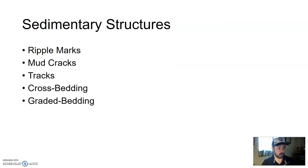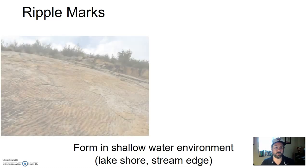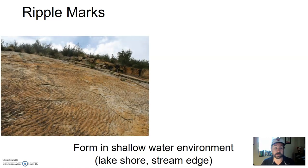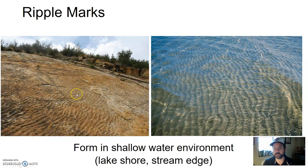Some of those structures include ripple marks, mud cracks, tracks, cross bedding, and graded bedding. Ripple marks form in shallow water environments — typically near a lakeshore or stream edge. The present is the key to the past: if I look at a rock structure now and see these different ripple marks, that tells me the sediment was deposited at the edge of some sort of stream, lake, or really shallow ocean environment. Let me give you part of the super secret code — it is the number seven.